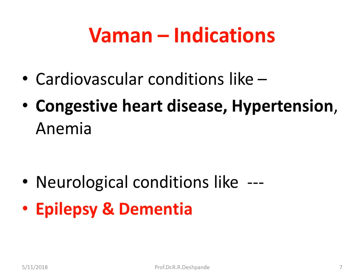Some cardiac conditions can be indicated for Vamana, but these must be very intellectually tackled by expert, skillful, and experienced practitioners. New practitioners should not give Vamana to cardiac patients to begin with. Congestive heart disease, hypertension, and some anemia arising from indigestion are indications for Vamana — but I repeat, cardiac cases should only be handled by an experienced and skilled Vaidya. Neurological conditions like epilepsy and dementia, where Ayurveda attributes toxins to vitiated Kapha or Pitta, are also indicated.